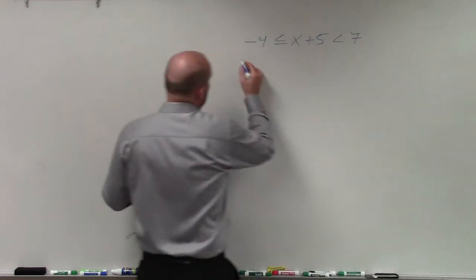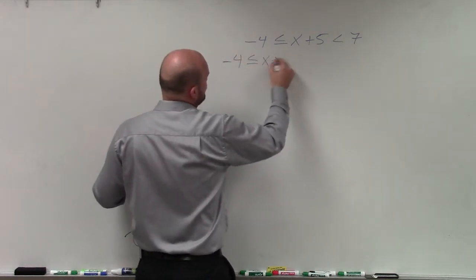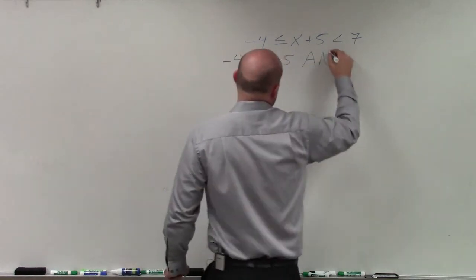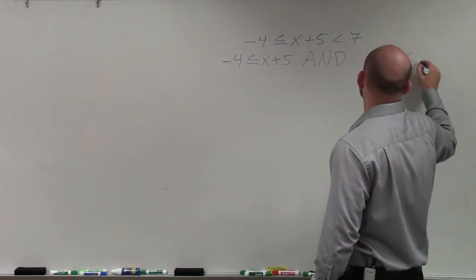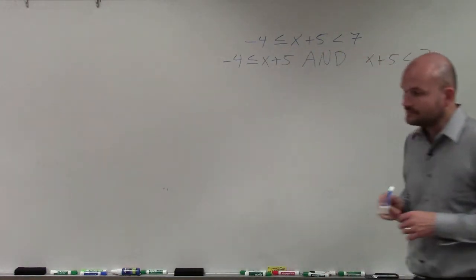So I can break this up as far as negative 4 is less than or equal to x plus 5, and x plus 5 is less than 7. All right?